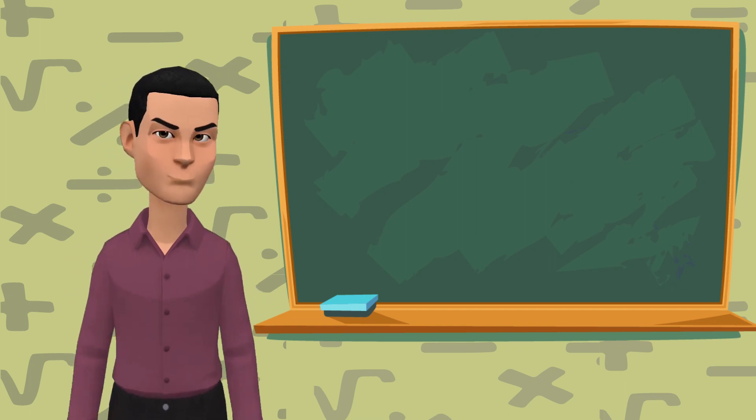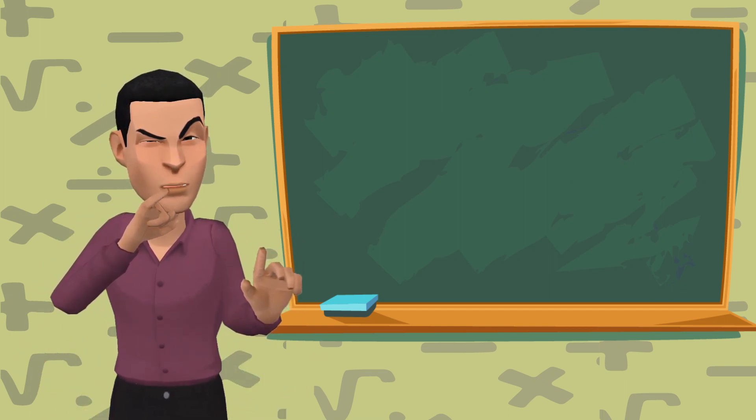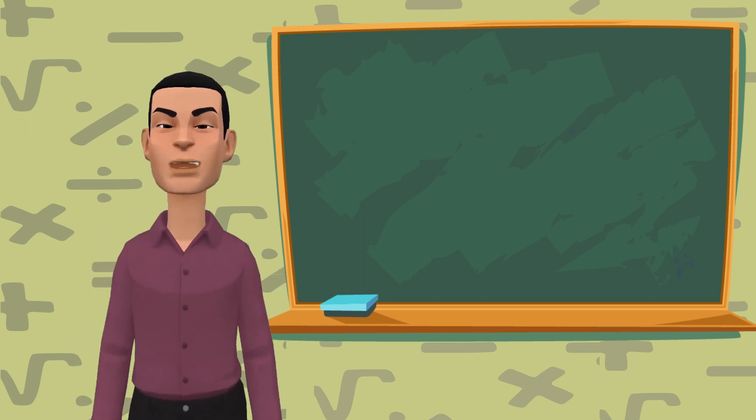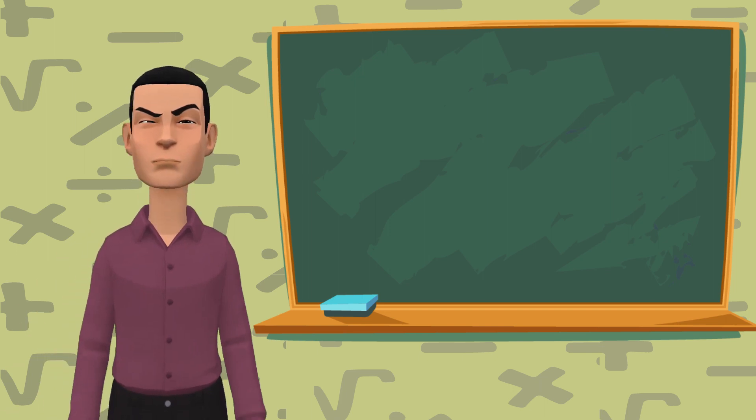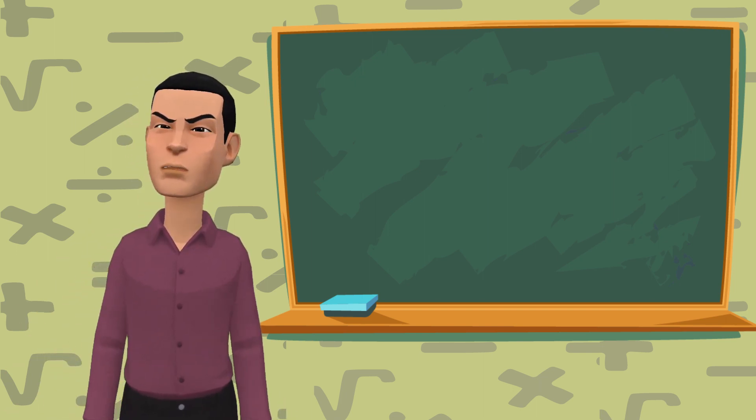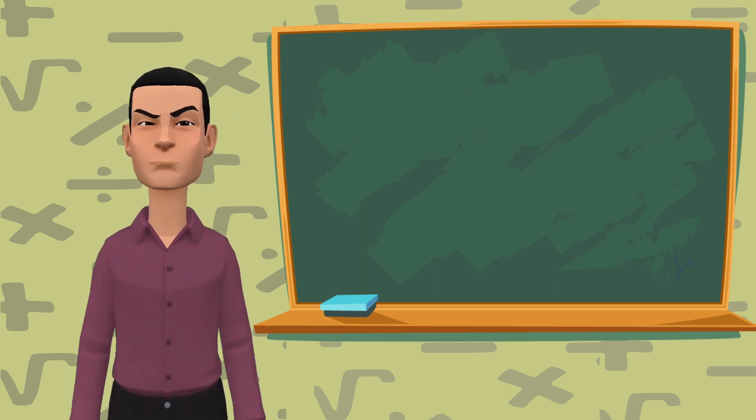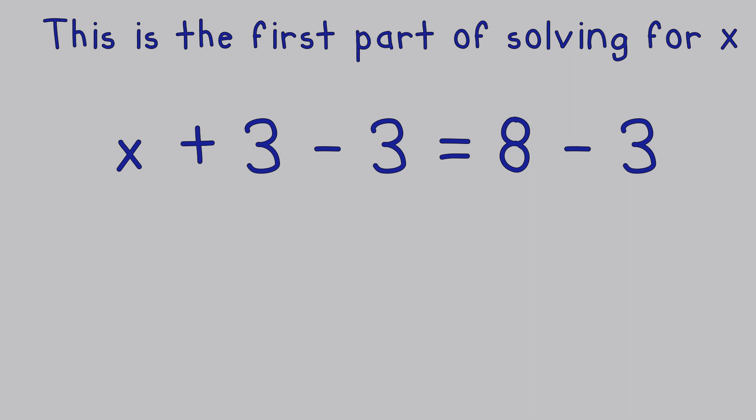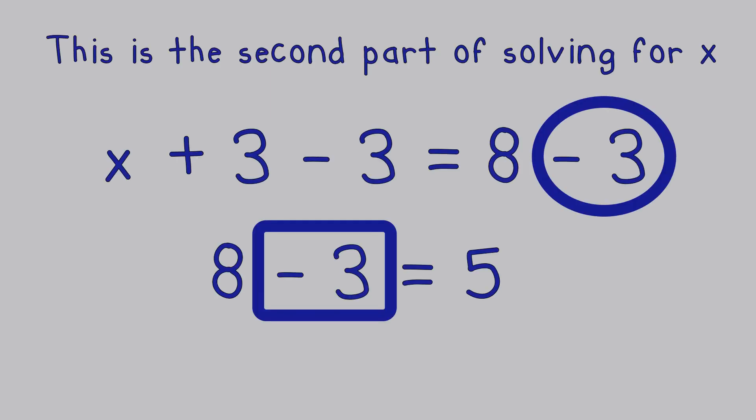To avoid making mistakes, we could say this: whatever is added to X, which is 3, should be taken away from 8. The same should also be taken away from X because adding 3 to X made it have 8. Let's see how it all works out mathematically. Let's remove or subtract 3 from both X and 8. Once the 3 is removed from X, X stands on its own. We need to do the same for 8 like this.